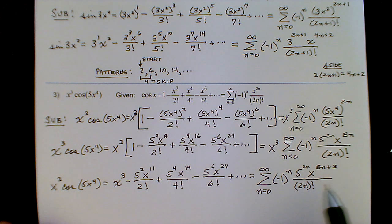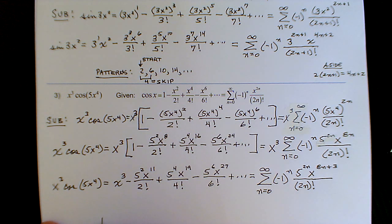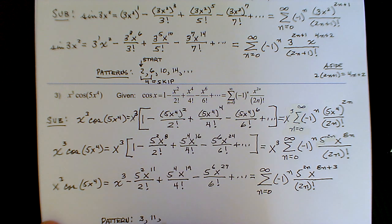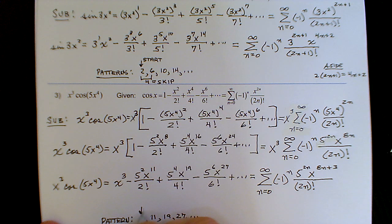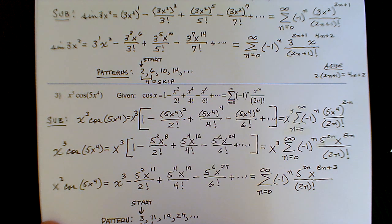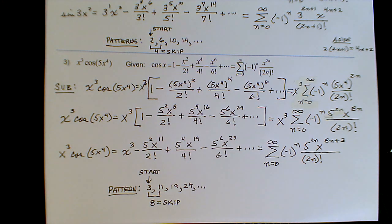Just to show the concept of the pattern — the powers on x go 3, 11, 19, 27, and so on. Notice 3 is the starting point, which is why we have the plus 3 in the summation, and the difference of 8 is what I refer to as the skip — for every value of n it skips by 8. I'll stop here, make this a short video, and we'll come back to do topic 16 to finish off this set of topics. Thanks.